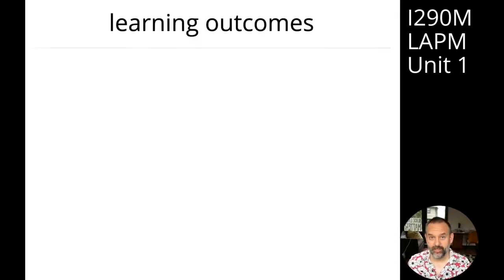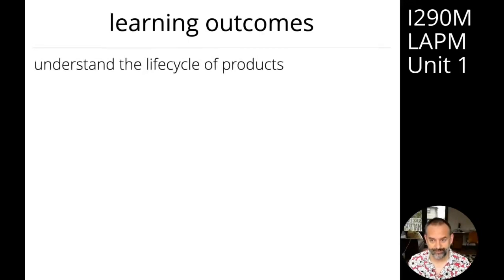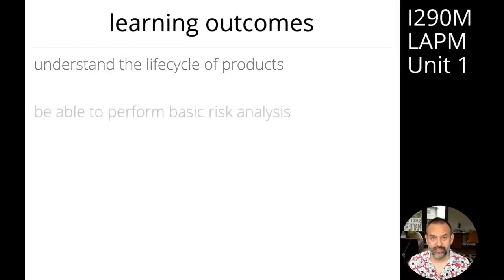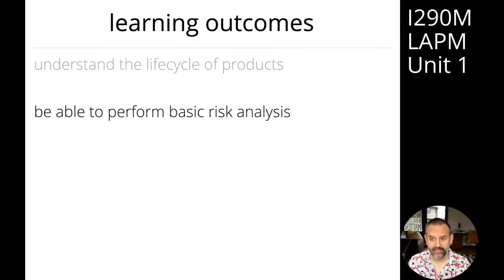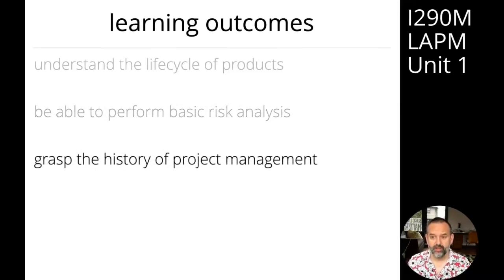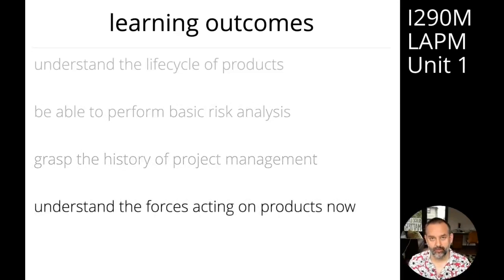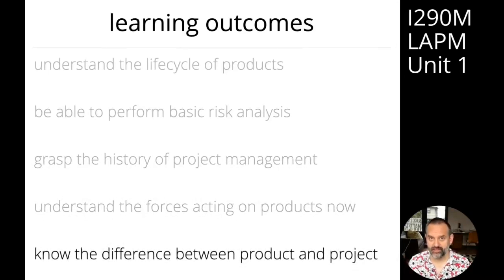In this unit, we're going to cover a few things. Firstly, we'll talk about the life cycle of products — how they're born, how they evolve, what happens to them. We'll talk about a key skill for all product managers, which is risk analysis. We'll discuss the history of project management. We'll cover the forces acting on products, and we'll end by discussing the difference between projects and products.